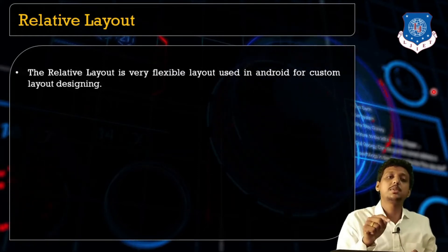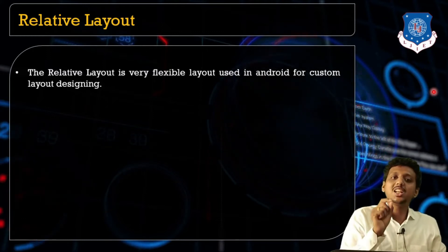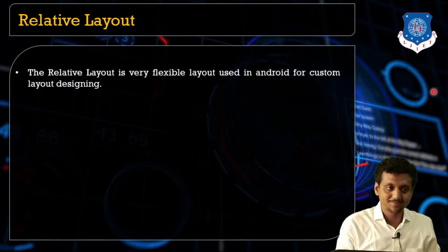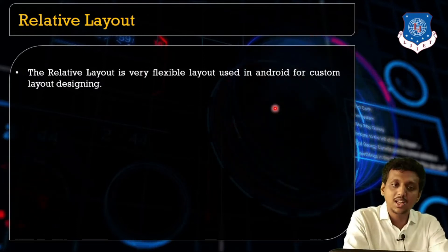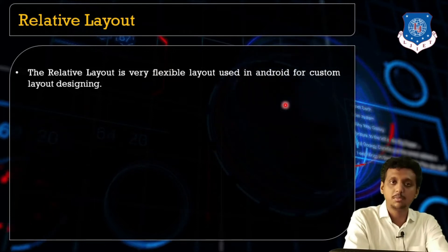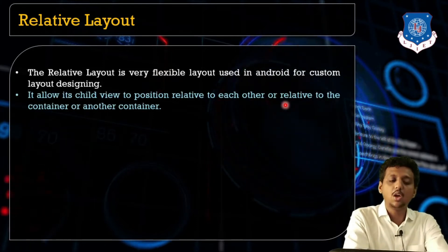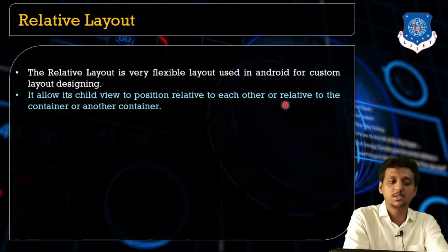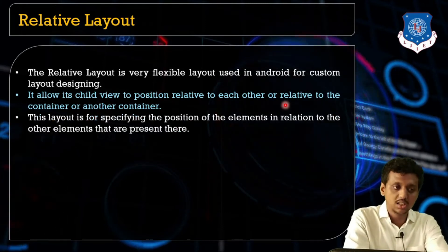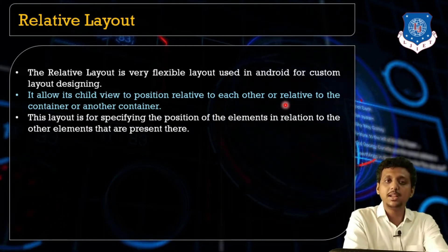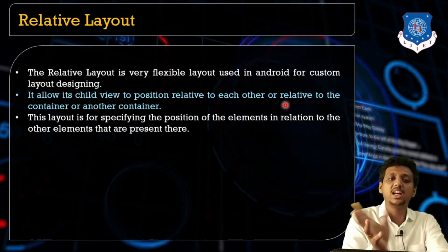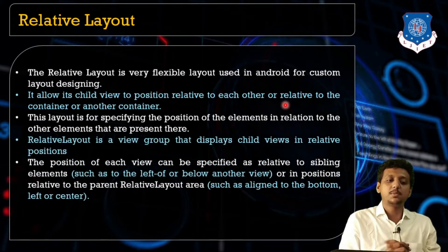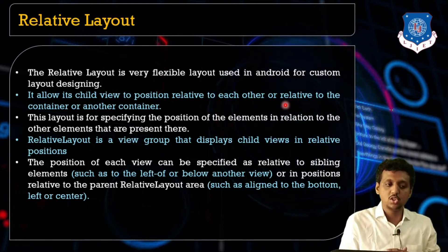For each and every view component, you need to specify its position. The Relative Layout is a very flexible layout used in Android for custom layout designing. It allows its children to position themselves relative to each other as well as to the parent container. This layout specifies the position of elements in relation to each other. The Relative Layout is a view group that displays child views in relative positions.